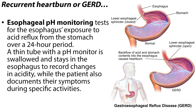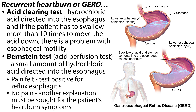To evaluate recurrent heartburn, esophageal pH monitoring tests for the esophagus's exposure to acid reflux from the stomach over a 24-hour period. A thin tube with a pH monitor is swallowed and stays in the esophagus to record changes in acidity, while the patient also documents their symptoms during specific activities. In conjunction with manometry and pH monitoring, the doctor may also perform an acid clearing test and a Bernstein test, or acid perfusion test. In the acid clearing test, hydrochloric acid is directed into the esophagus, and if the patient has to swallow more than 10 times to move the acid down, there is a problem with esophageal motility. In the Bernstein test, a small amount of hydrochloric acid is directed into the esophagus, and if the patient feels pain, the test is positive for reflux esophagitis. No pain means another explanation must be sought for the patient's heartburn symptoms.